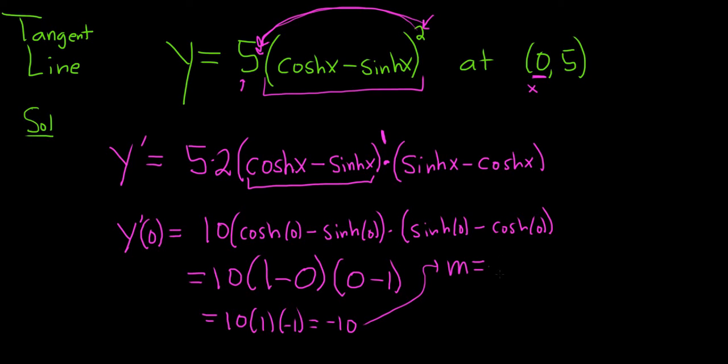So m is equal to negative 10. This is going to be the slope of the tangent line. Okay, our point is (0, 5). I'll write it again down here.